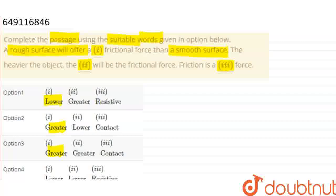Second, if heavier object is heavier, how is friction? If object is heavier, then friction force is greater, lower, greater, lower. In this case, choose the case of friction. And friction is resistive force, contact force. In this case, choose the fill.